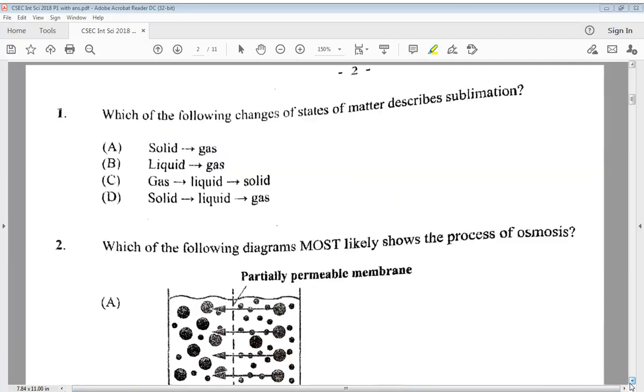Question one says, which of the following changes of states of matter describes sublimation? A, solid to gas. B, liquid to gas. C, gas to liquid then to solid or D, solid to liquid to gas. We know the answer is A, solid to gas.